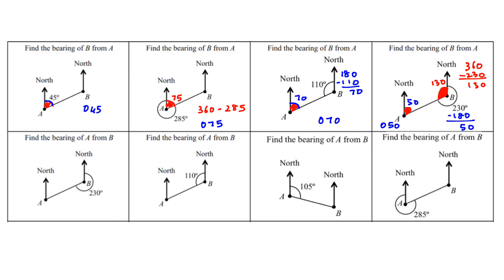Now these four questions are for finding the bearing of A from B. At B, we go from north clockwise to find the angle for each question. The first one — moving clockwise from north — it's 230, so the bearing is 230. The second one: we want the reflex angle, so 360 minus 110 gives 250. The bearing is 250.